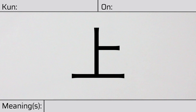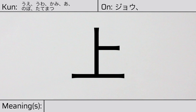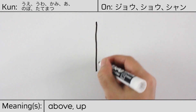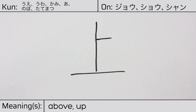Welcome to this lesson on Japanese kanji. Today, we'll be discussing this character. This kanji has kunyomi or Japanese readings of ue, ua, kami, a, nobo, or tatematsu, and it has onyomi or Chinese readings of jiou, shio, or xiang. This character has the meanings above or up. Here is the stroke order. This character is made up of the following radicals or parts.